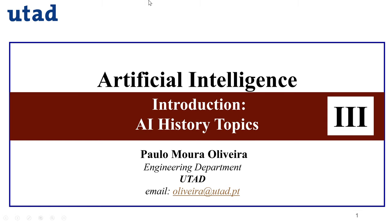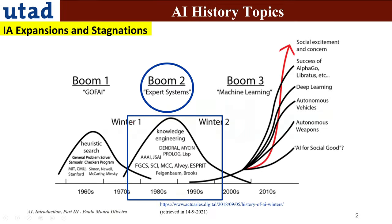Hello, here we are moving to part 3 of the artificial intelligence introduction. We are going to continue to address some history topics. We have seen in the previous video that there was Boom 1 — the goal of old-fashioned artificial intelligence. Now we are going to address Boom 2, which is mainly about expert systems, and then Boom 3, which is mainly about machine learning.